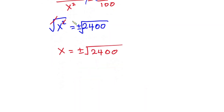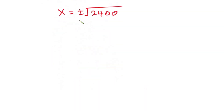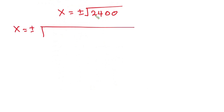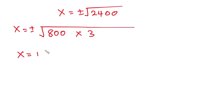Now we can go ahead and simplify this further. So x is equal to plus or minus square root of 2400, which is the same as square root of 800 times 3.